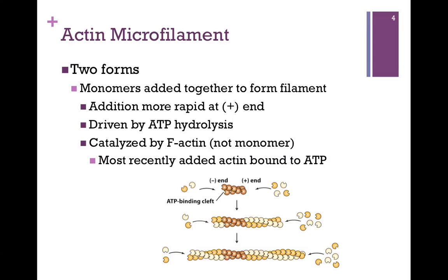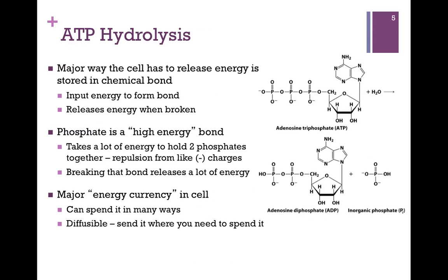In other words, G-actin does not hydrolyze ATP and then assemble; it assembles into the filament first, and then ATP is hydrolyzed. So if we look at an end where we had just added one of the monomers, it would still be bound to ATP. However, an older end would be bound to ADP — we've lost a phosphate through ATP hydrolysis.